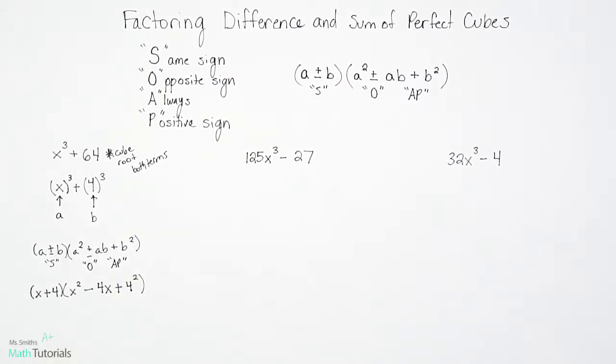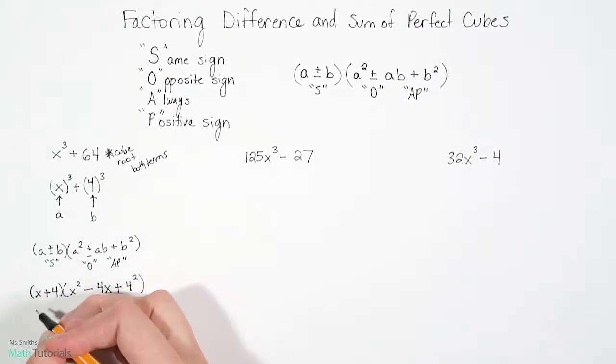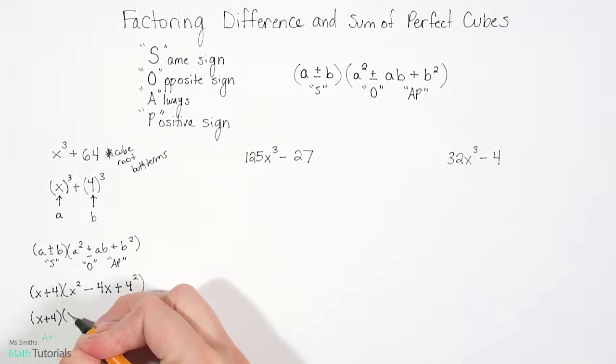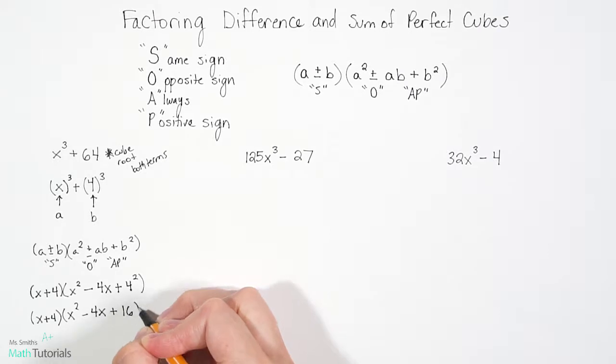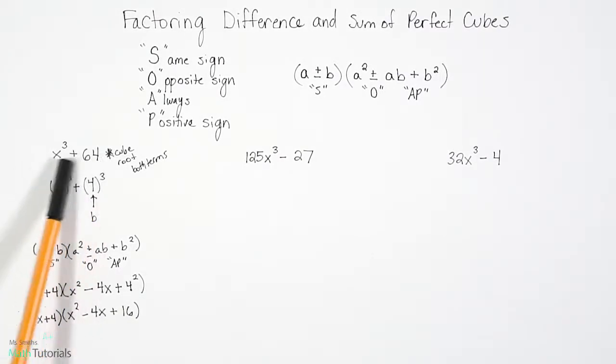Now our final step is to actually simplify anything we can. So notice like this four squared here. What is four squared? Well, that's four times four, which is 16. So we want to actually rewrite this completely simplified. So x plus four, nothing changes there. x² minus 4x, nothing to change there. But this plus four squared, we're going to change out to plus 16. And now we've factored our sum of perfect cubes into a factored form.